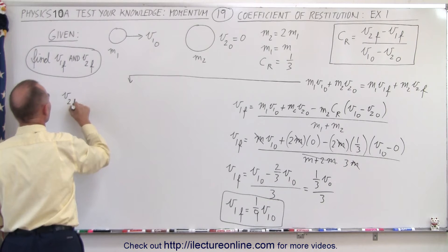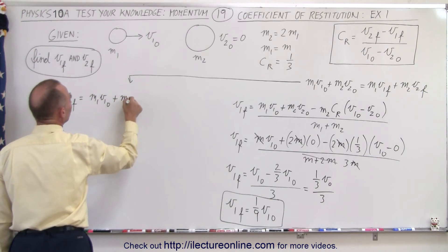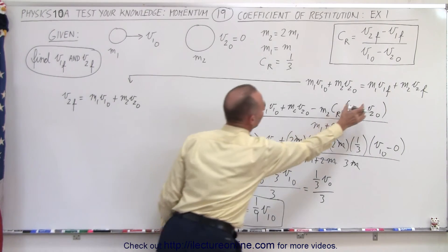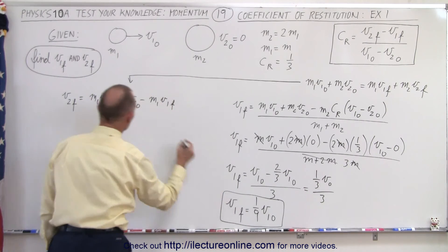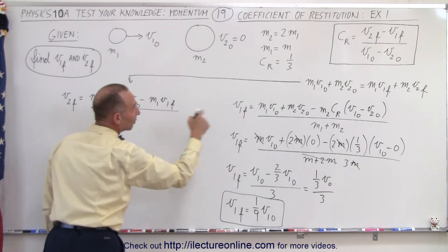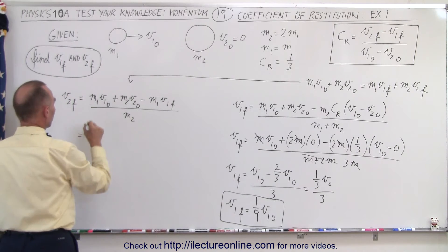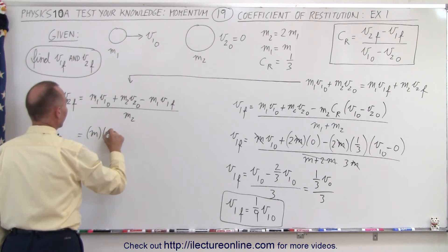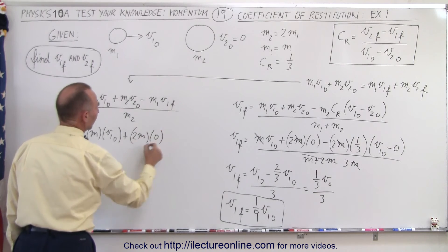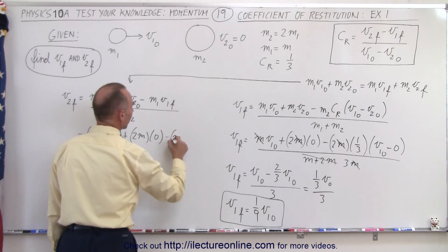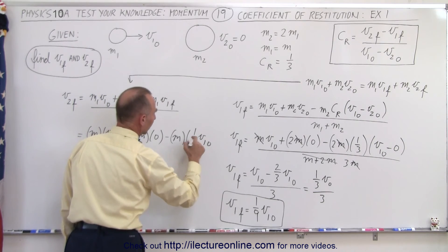v2 final is equal to the left side, which is m1 times v1 initial plus m2 times v2 initial, then we move the m1 v1 final term to the other side — minus m1 times v1 final, which we found — all divided by m2. Now let's plug in the values: m1 is m times v1 initial, plus m2 which is 2m times its initial velocity which is 0, minus m times v1 final which is one-ninth v1 initial.